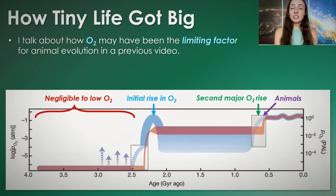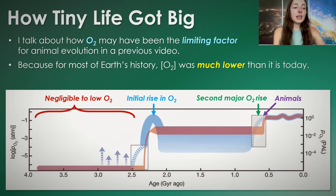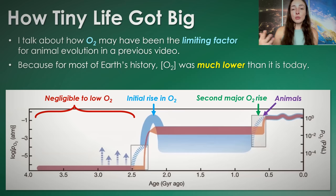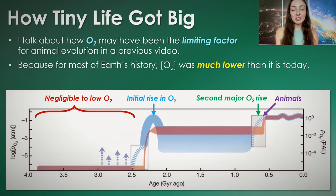Before about 2.4 billion years ago, oxygen initially rose to a certain level, and then there was another major rise — a second oxygenation event — that rose it to even higher levels, which potentially led to allowing animals to evolve and diversify. I actually talk about oxygen potentially being the reason for animal evolution in my 'Did Oxygen Cause Animal Evolution?' video, which I'll link to the top right if you want to check it out.